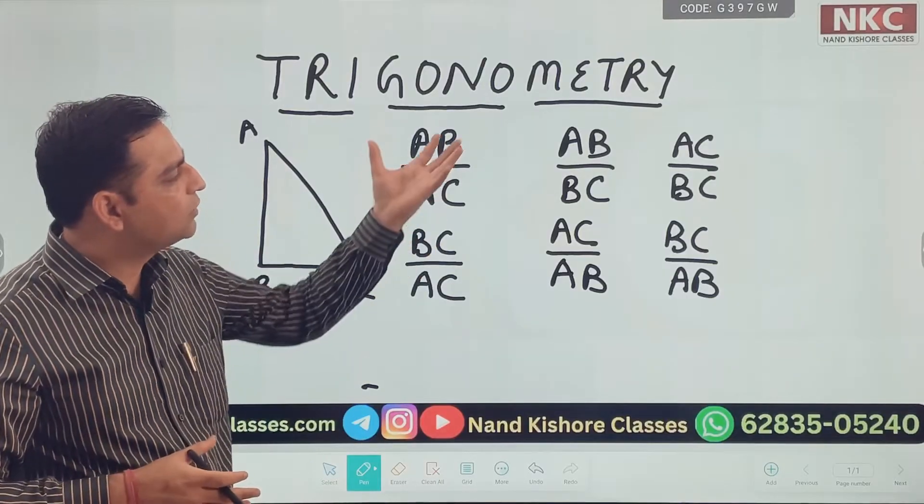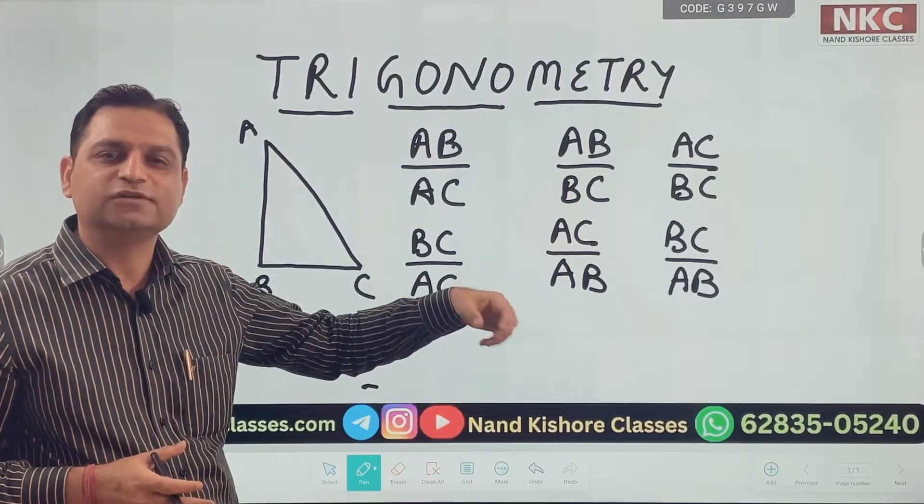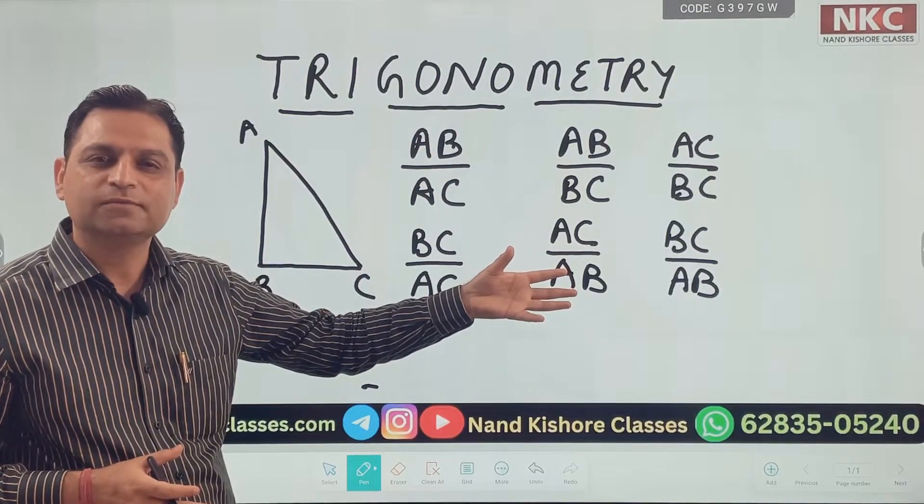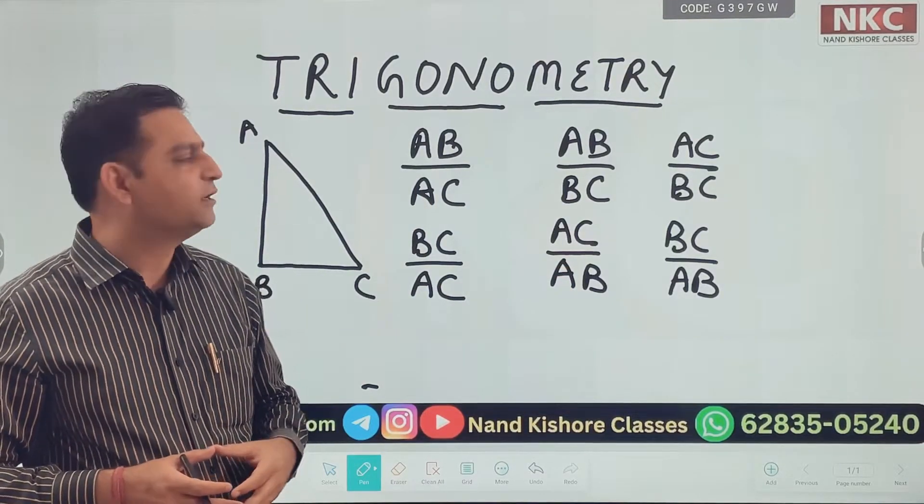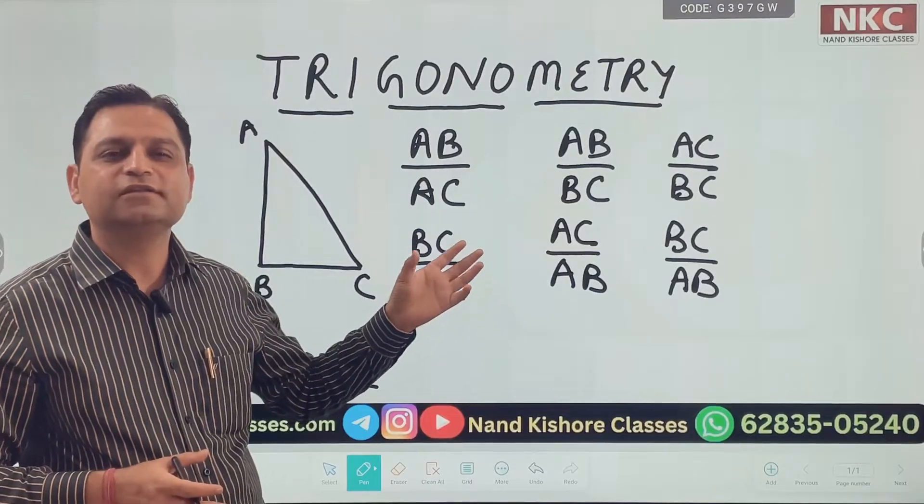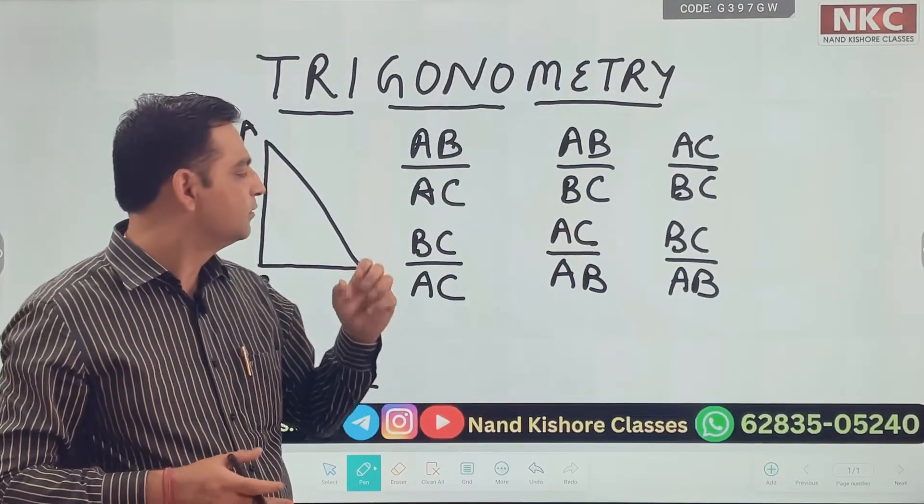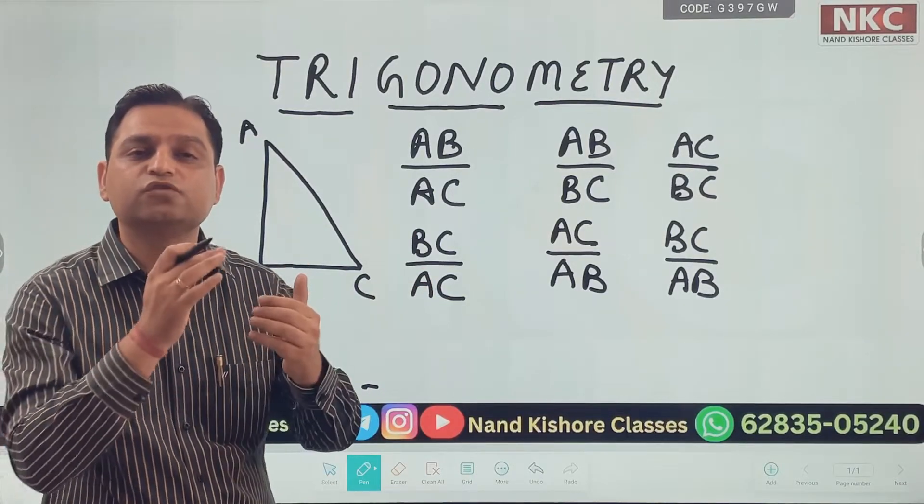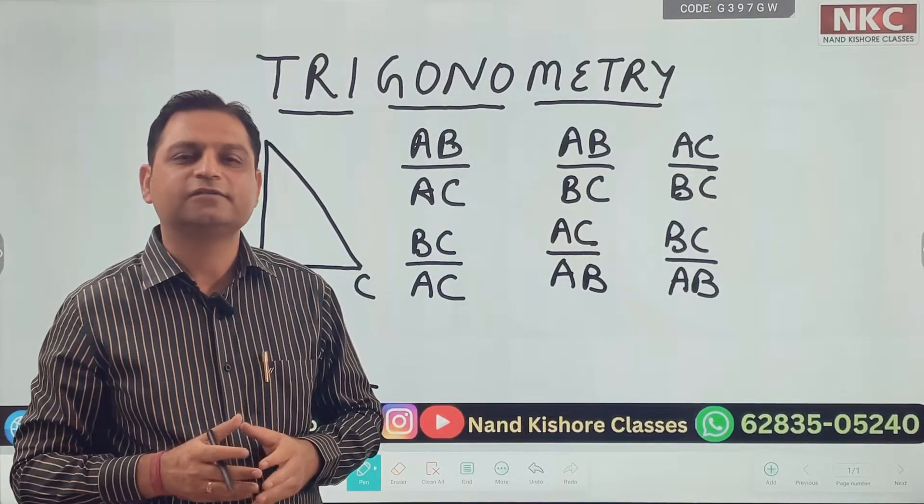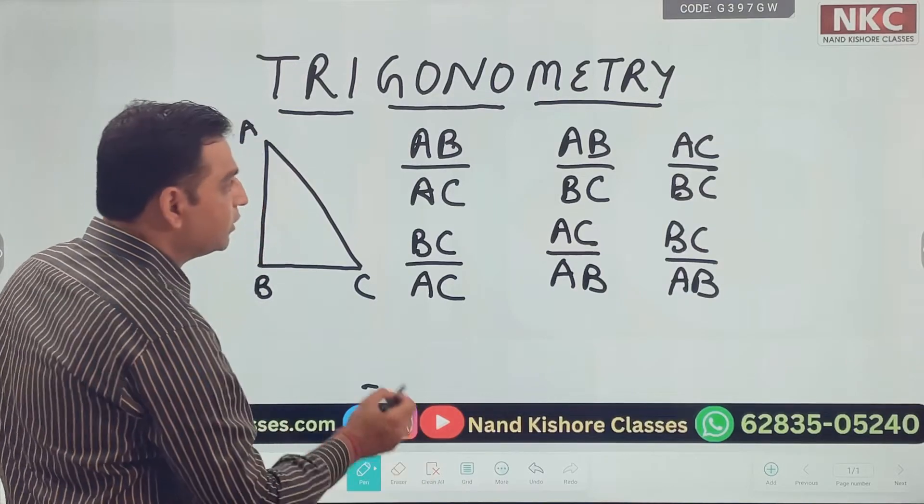Now, no doubt I am having all these ratios. These are known as trigonometric ratios. But how would I recognize them? If I need to call AB upon AC, there should be some name to it. BC over AC, there should be some name to it. Now, what are those names? Let us discuss about those all names now.